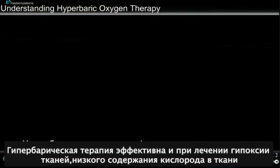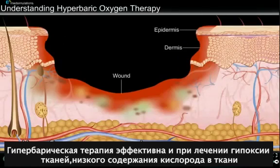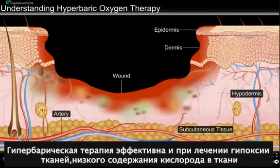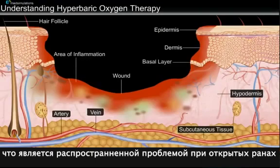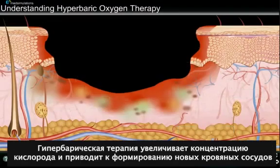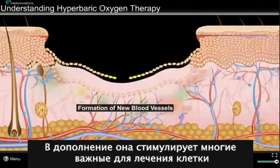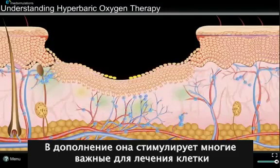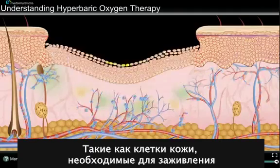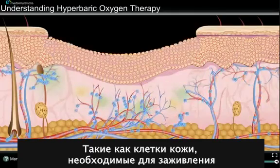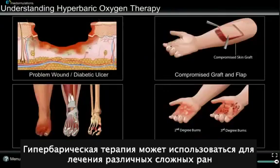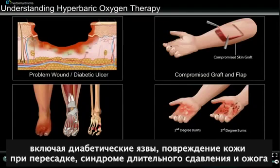Hyperbaric therapy is effective in improving tissue hypoxia, or low levels of oxygen in the tissue, which is a common problem in all chronic wounds. The therapy increases the oxygen concentration around the wound, resulting in the formation of new blood vessels. Additionally, hyperbaric oxygen stimulates many cells important for healing, such as the formation of new skin cells that help to close the wound. Hyperbaric therapy can treat problem wounds including diabetic ulcers, compromised skin grafts and flaps, crush injuries, and thermal burns.